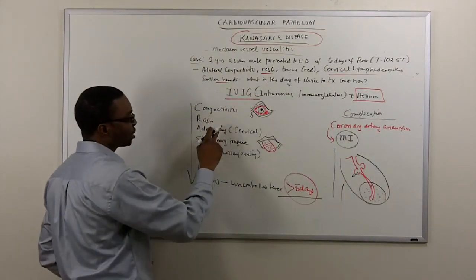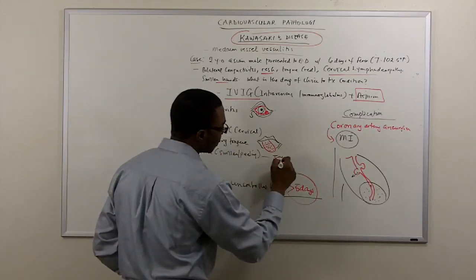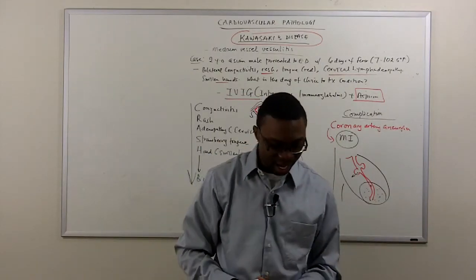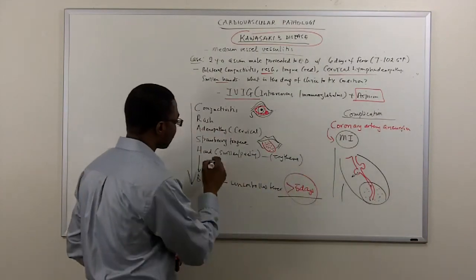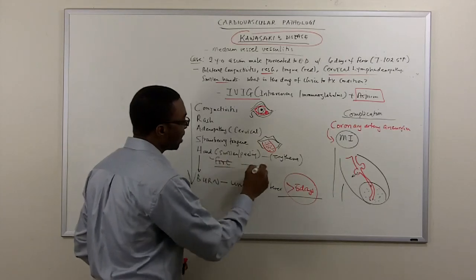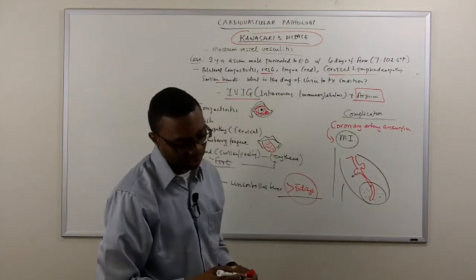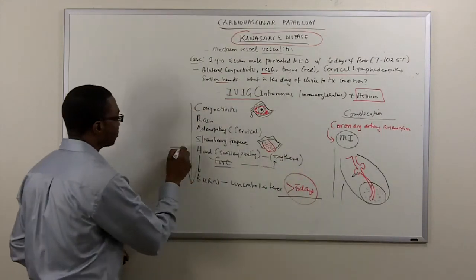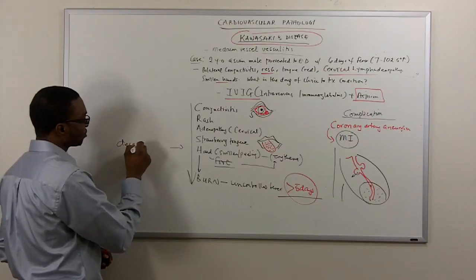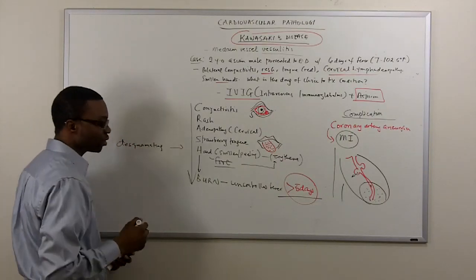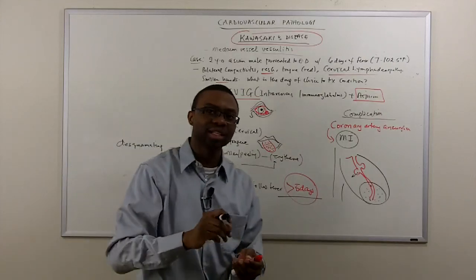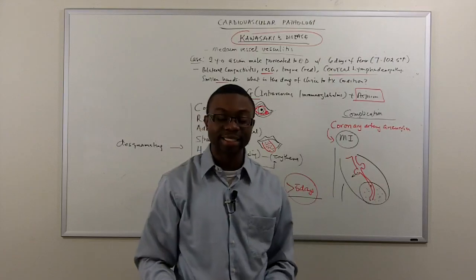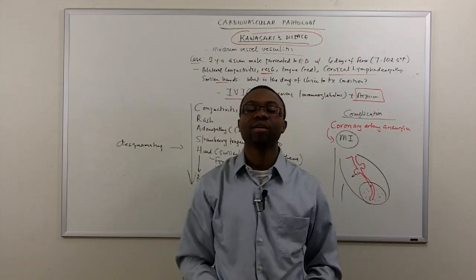So remember, conjunctivitis, rash, adenopathy, strawberry tongue, hands. They usually have erythema in their hands and feet. Hands and foot erythema with peeling from the rash. It's called a desquamating rash. Desquamating is just a fancy word for a rash that's peeling off the skin. And that's basically what Kawasaki's disease is. That brings us to the end of our lecture.